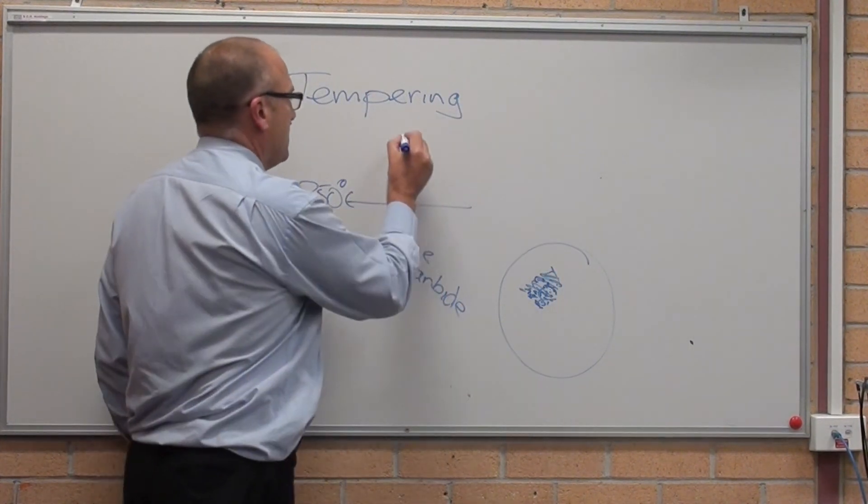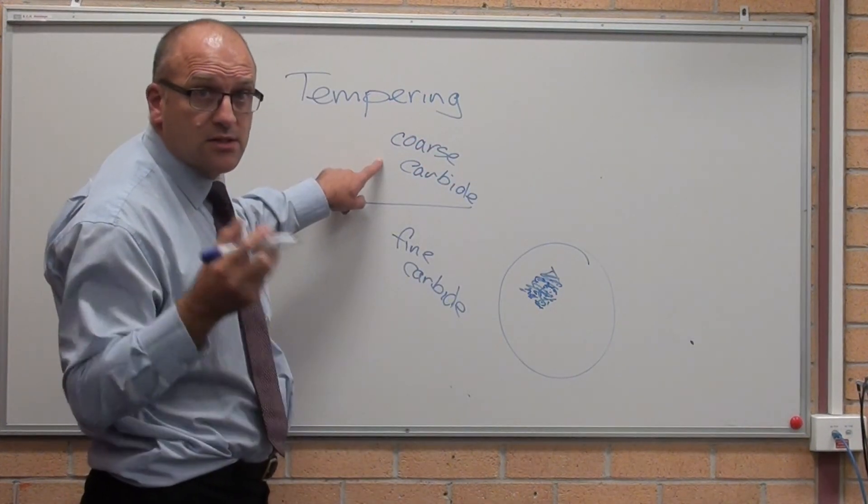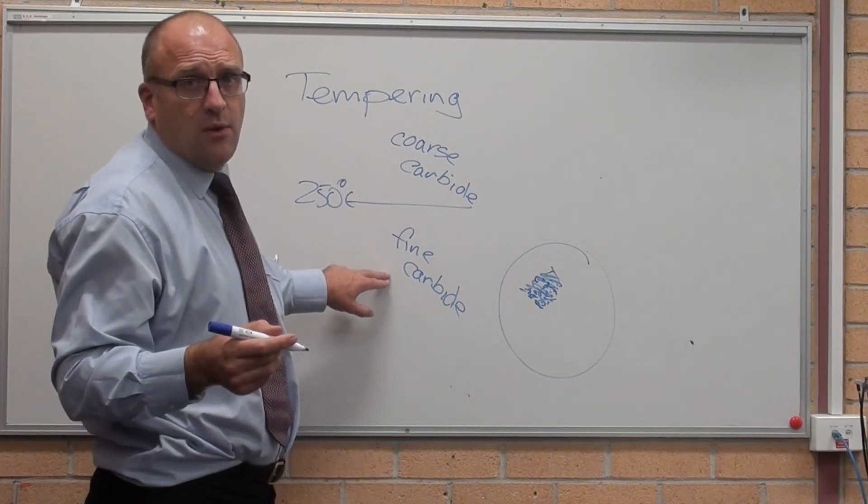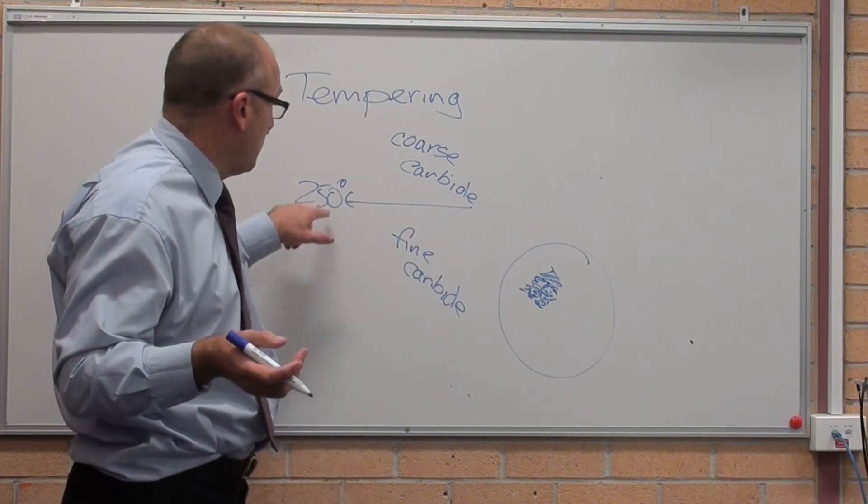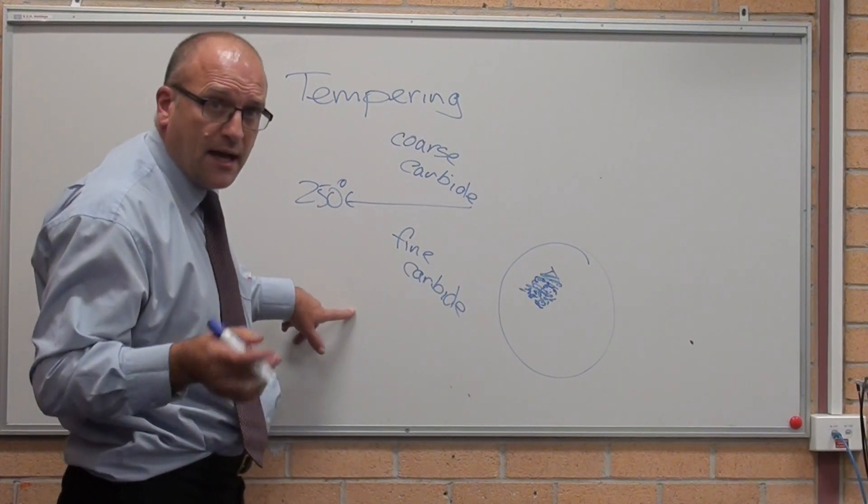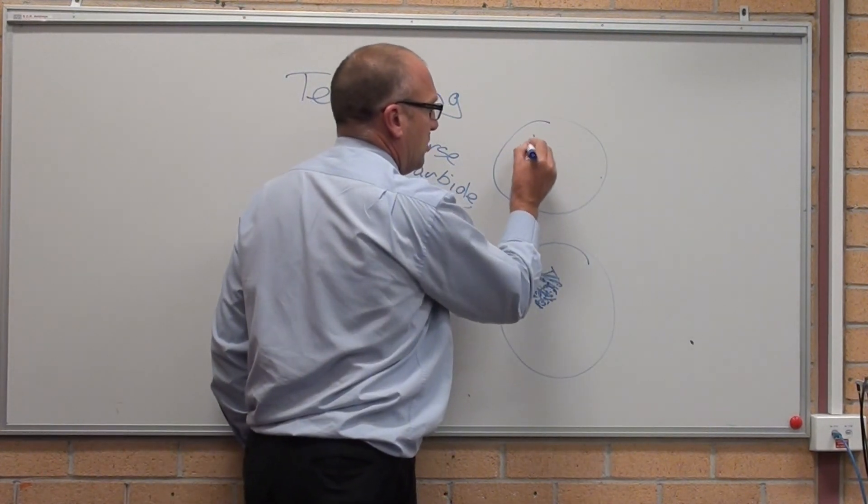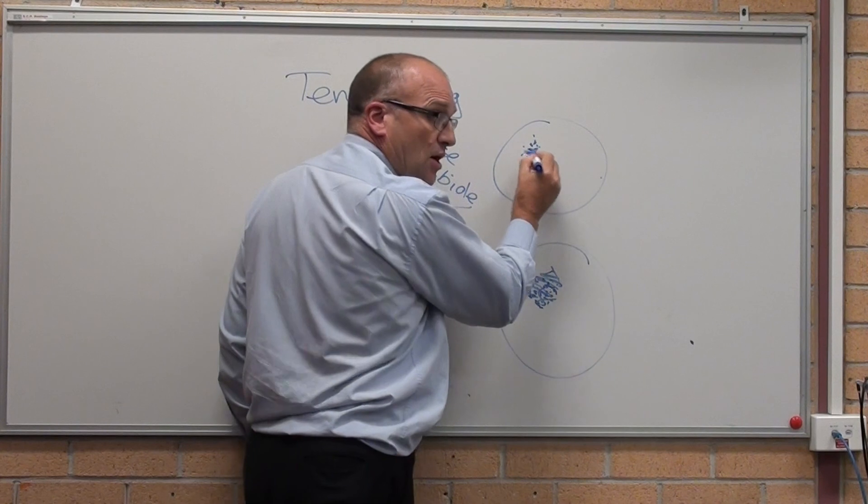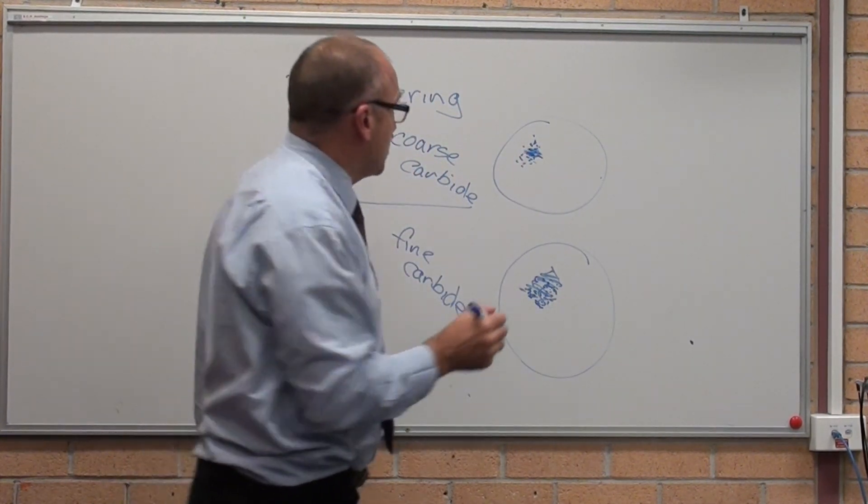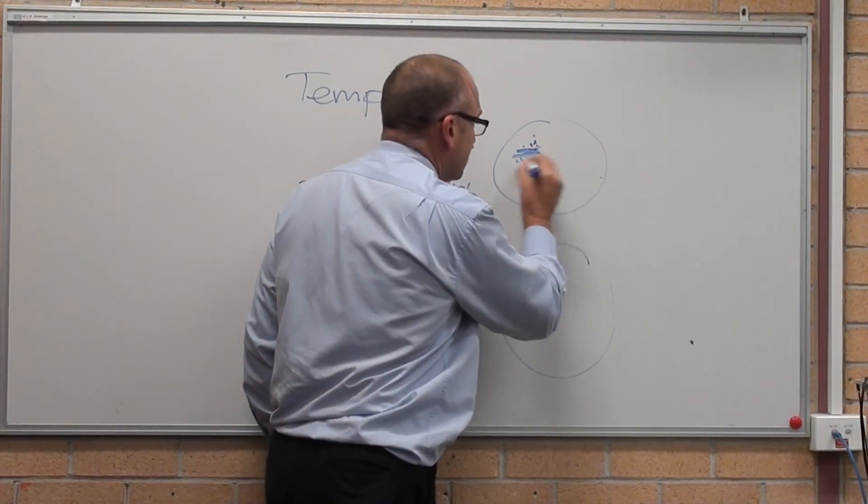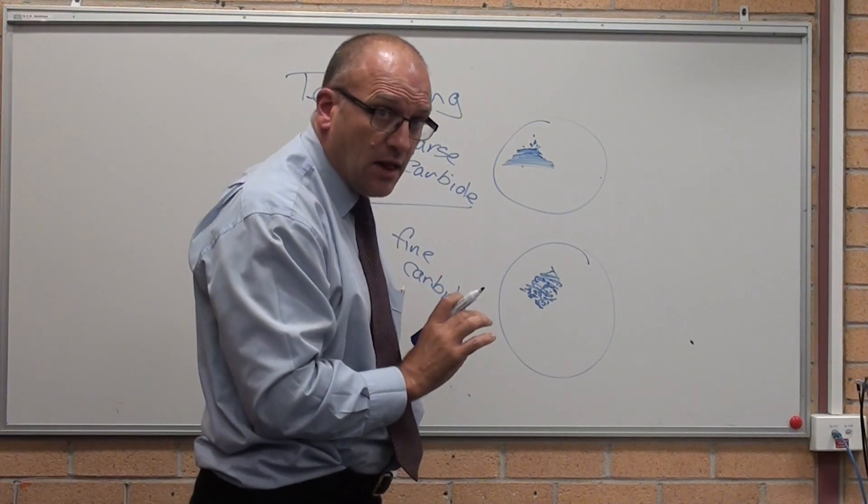Above 250, you get a coarse carbide. This is actually cementite. It's a cementite structure. Below 250, you actually make another form of carbide, but that's a technical distinction. So below 250, fine carbides everywhere through the structure. Above it, a bit more tempered than it goes, but it's still too hard to see. So you'll find when you're asked to draw a microstructure of tempered steel, it's just basically one grey blob that you cannot see detail in under an optical microscope.